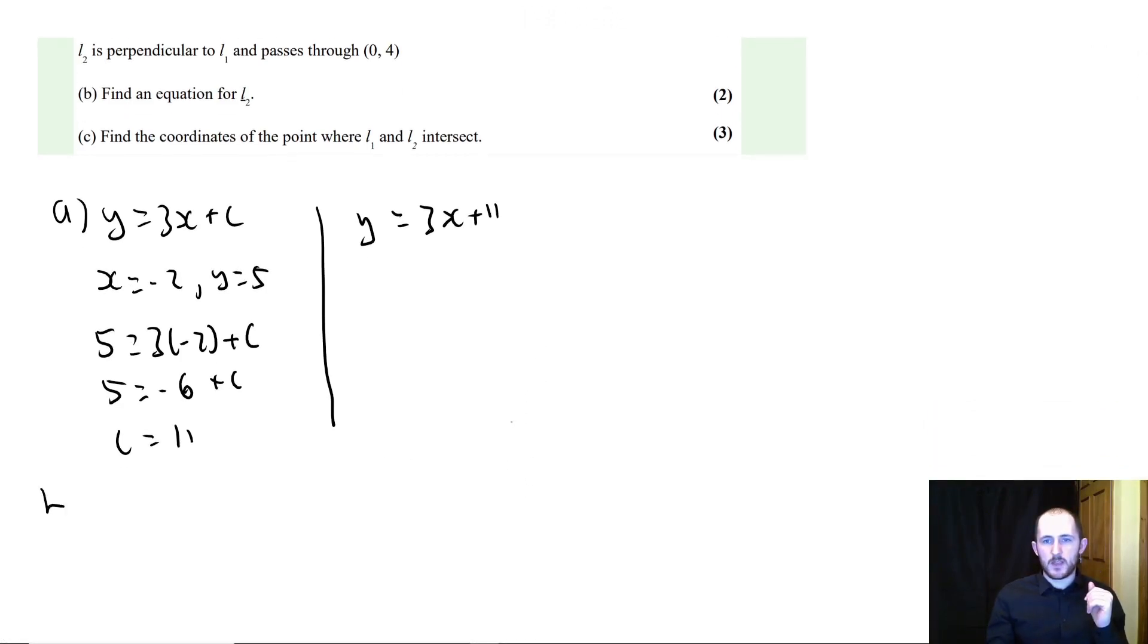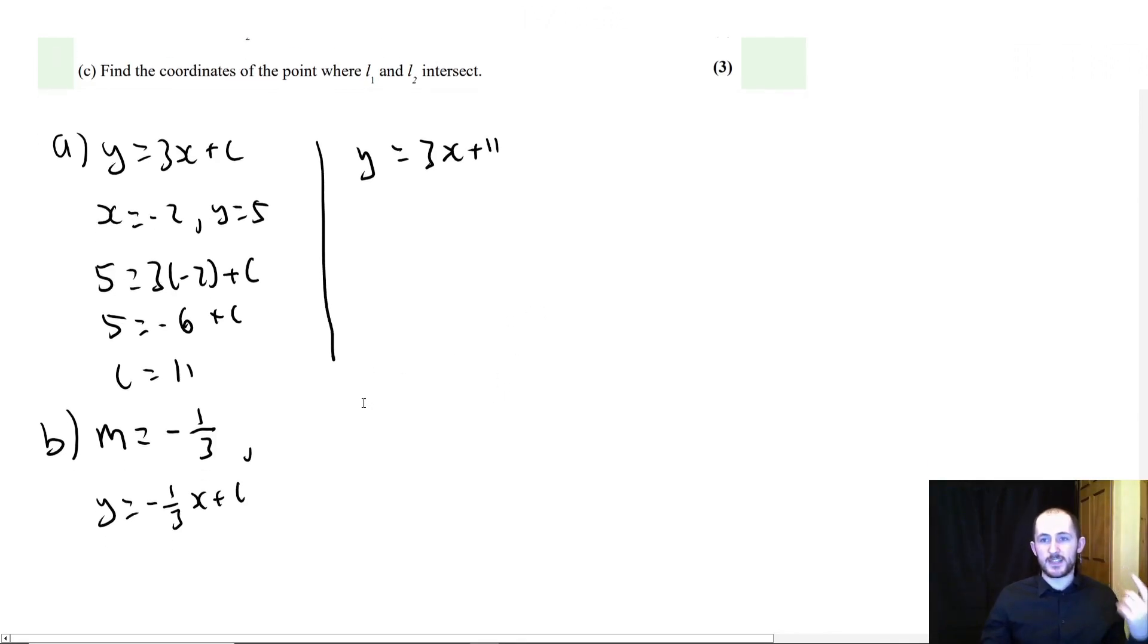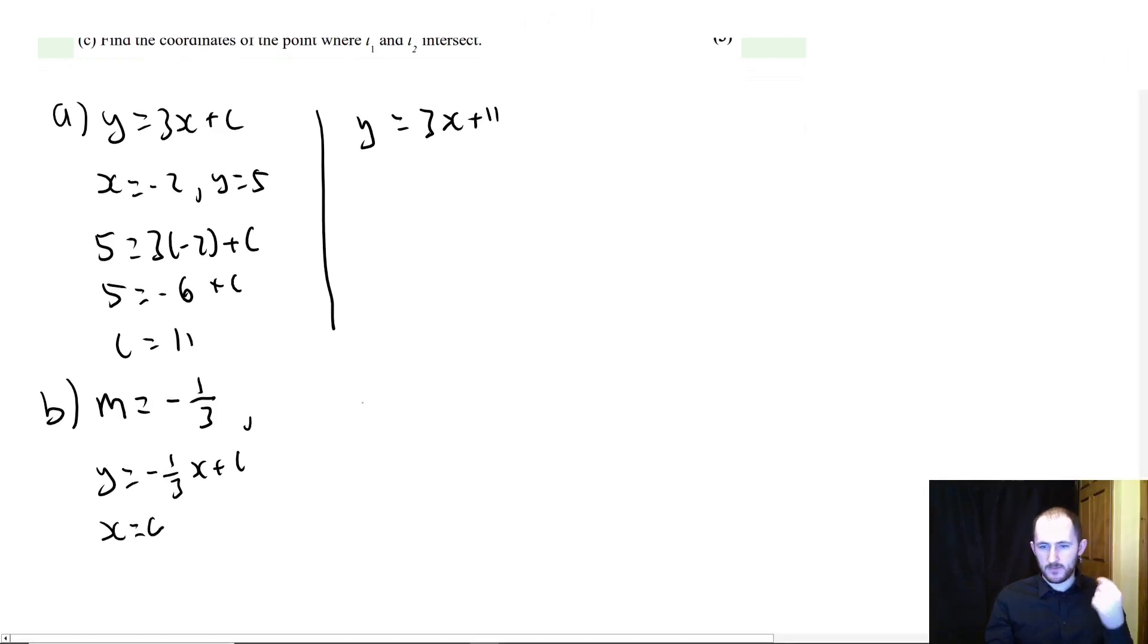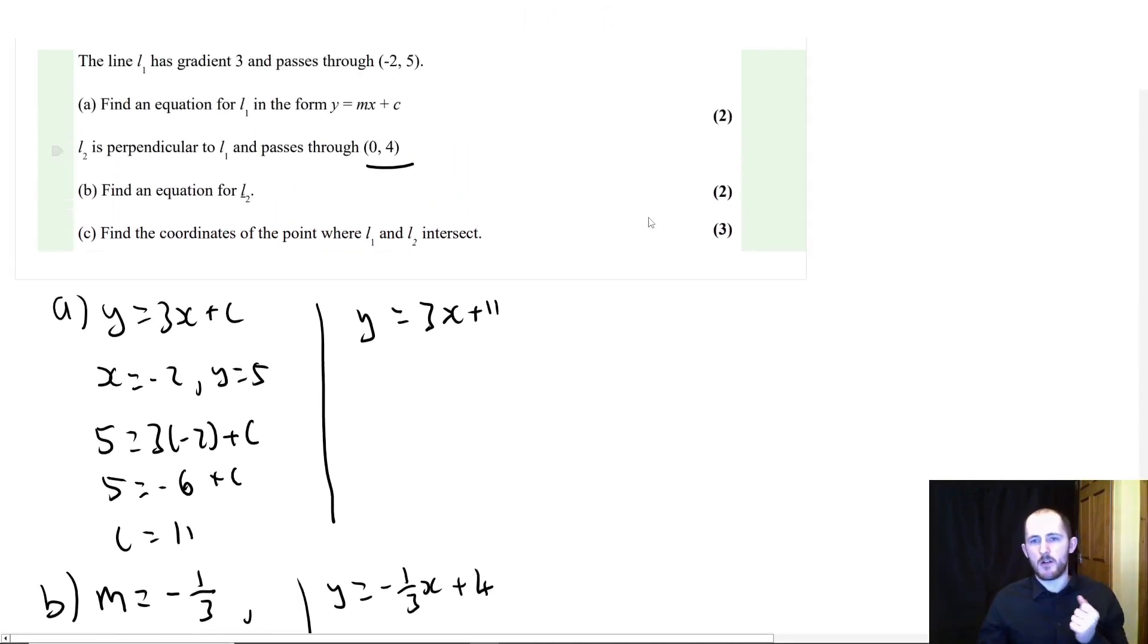Part B. L2 is perpendicular to L1 and passes through 0, 4. Well, if it's perpendicular, the gradient is the negative reciprocal. So minus 1 over the gradient, which is 3. So negative 1 over 3. So now, our equation has become Y equals minus 1 third X plus C. And once again, it passes through 0, 4. So in this case, X is 0, Y is 4. Can you see how quick this can be? We have 4 equals 0 plus C. And then we're done. So now we just have Y is equal to minus 1 third X plus 4. Easy peasy.